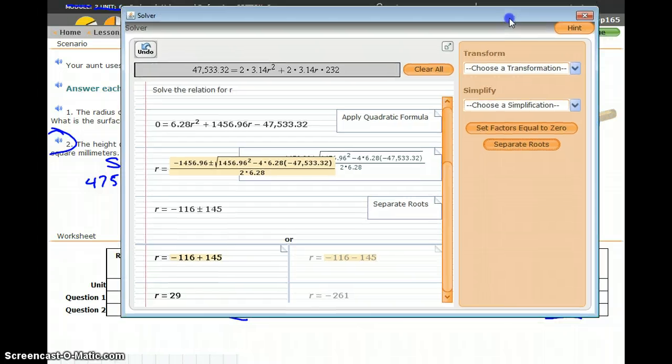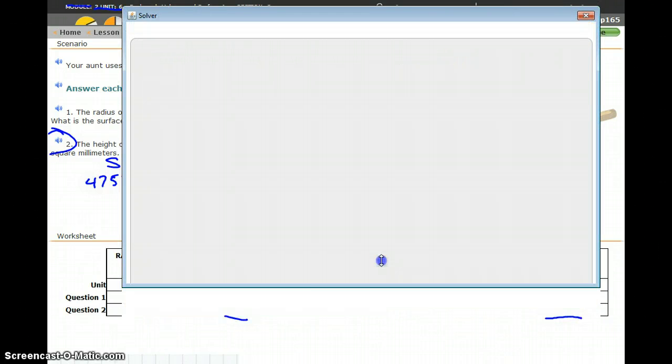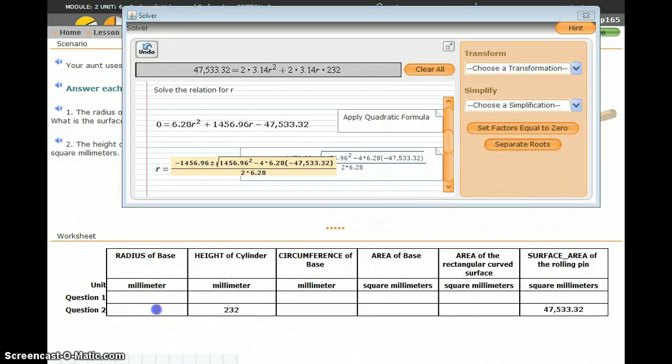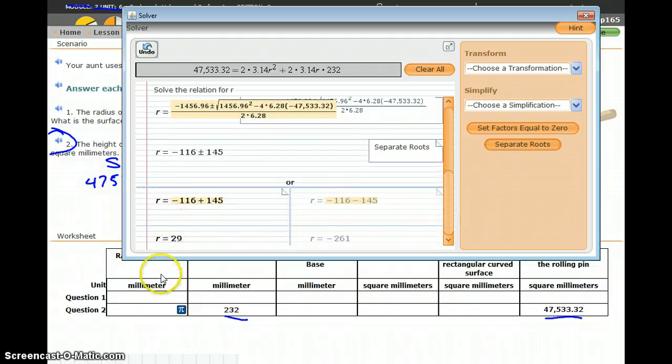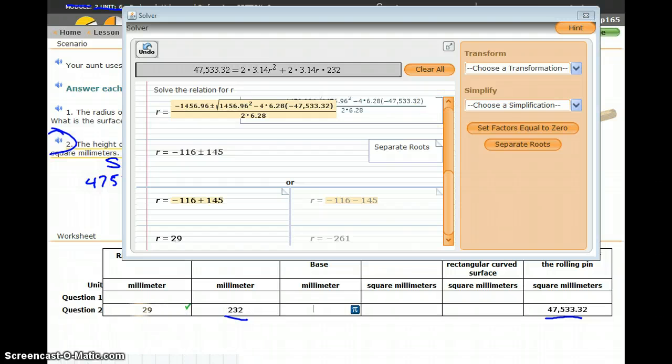And so going back to our table, I was now able to figure out a cylinder with a height of 232 and a surface area of 47,533.32. That gave us a radius, or that's going to have a radius of 29 millimeters.